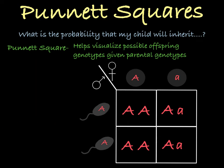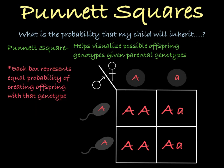Now each of these boxes in the square represents the probability of creating offspring with that genotype. Because there are four boxes and they all have an equal probability or chance of happening, you have a 1 in 4 chance, or a 25% chance, that these parents will produce a child with that genotype in a reproductive event. The same goes for each box.